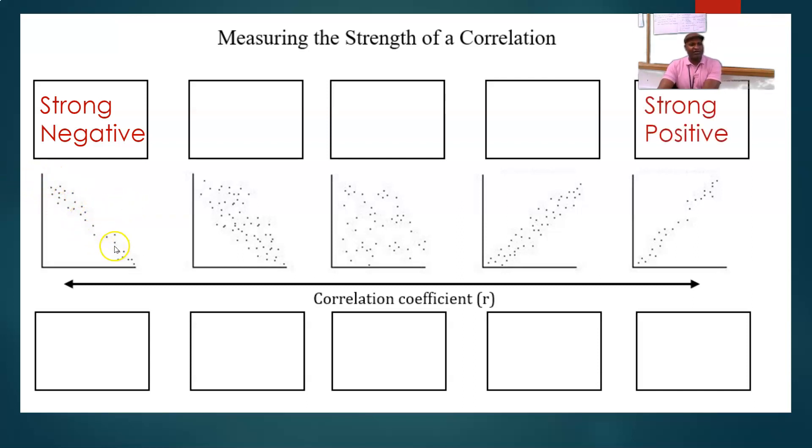Now, if that's a strong negative correlation, this is what a strong positive correlation looks like. Notice that the data is increasing as you go from left to right. But it's kind of narrow. Close to a straight line. Close, not a straight line, but closer to one.